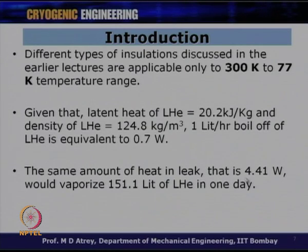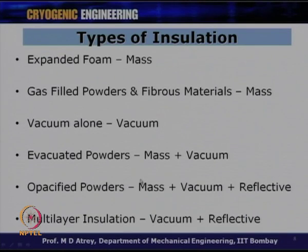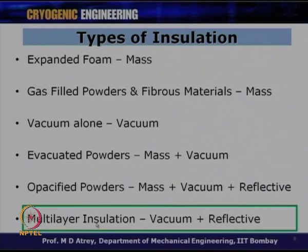If we have a heat in leak of 4.41 W at 4.2 K, it causes a huge, unacceptable boil-off. Therefore, there is a need to develop better insulations for the 77 K to 4 K temperature range. That is why we are going to study multilayer insulation.